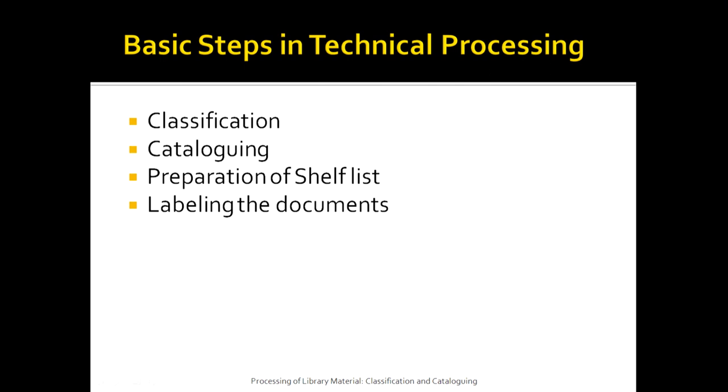Let us now see what the basic steps in technical processing are. The first step is classification, the second step is cataloging, thirdly preparation of shelf list, and fourthly labeling the documents. In this particular lesson, we are going to discuss chiefly what classification is all about, what cataloging is all about, and how to prepare a shelf list.